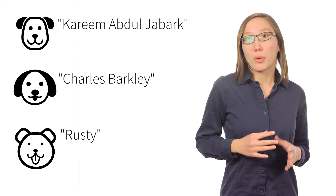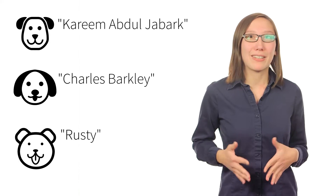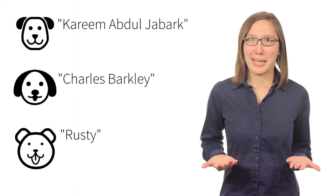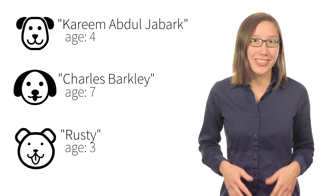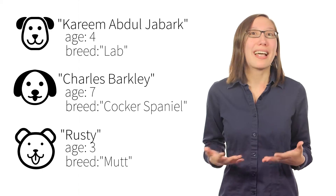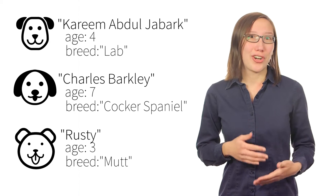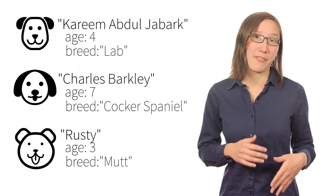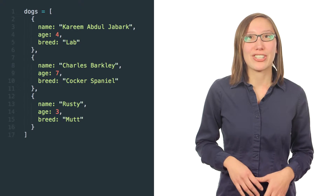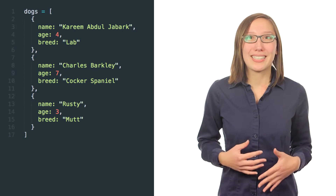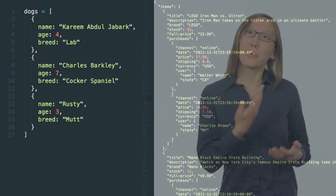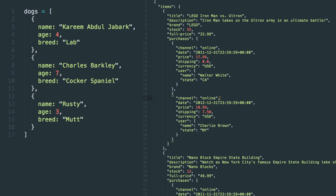We'll also see how we can use Ruby hashes to store more detailed information about each dog. Dogs are more than just a name — we can add in an age for each dog, and let's also give them a breed. We now have a collection of dogs where each dog consists of multiple pieces of information. By the end of this session, we'll be able to use Ruby arrays and hashes to store this type of complex data in code, whether we're working with dog data or real product data. Let's get started.